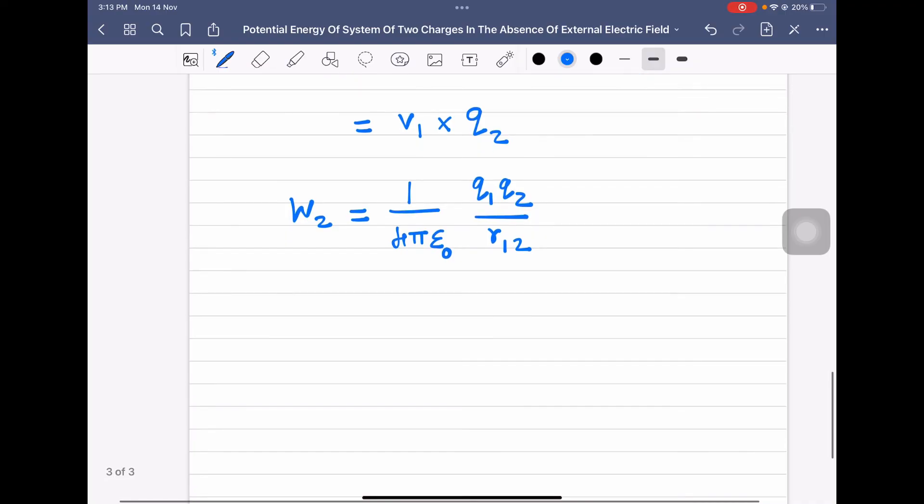Now, what is the total work done? Total work done is equal to W1 plus W2. We know that W1 is equal to 0, so therefore, total work done is equal to W2, or that is equal to 1 by 4π epsilon 0 into Q1 Q2 divided by R12.